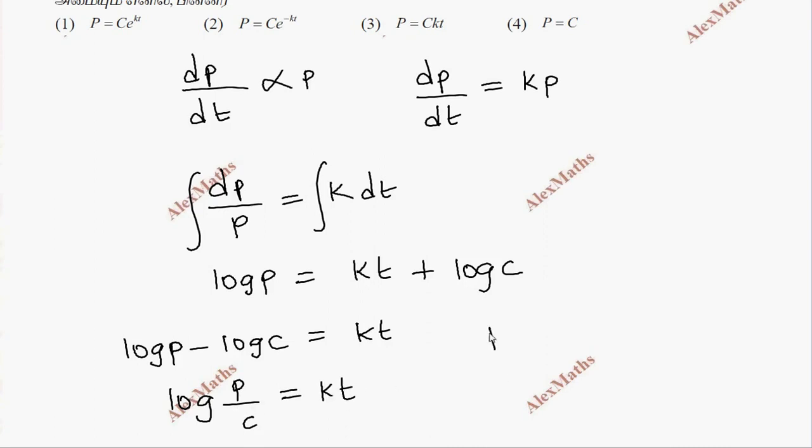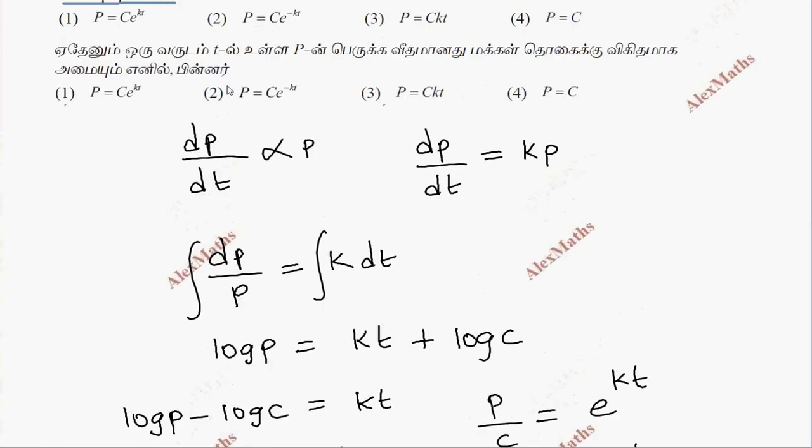Taking e to the power on both sides, we get p equals c times e to the power kt. This is option 1.